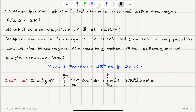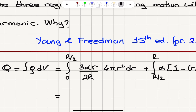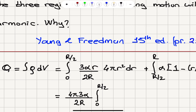This is a spherical charge distribution with a non-uniform charge density for r less than R. Looking at the first integral, we can take the constants outside: 4π, 3α, and 2R do not depend on r. Taking them out, we get (4π · 3α)/(2R) times the integral from 0 to R/2 of r³ dr.